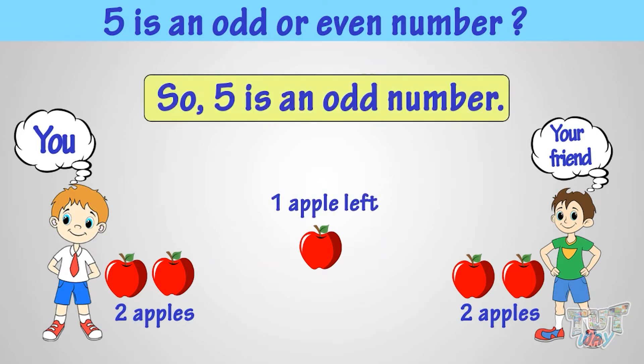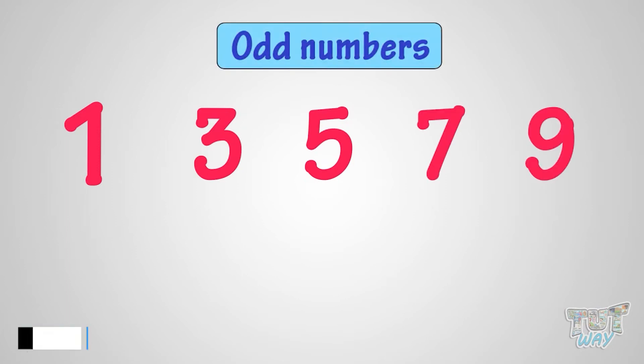Good! Now don't forget, one, three, five, seven, and nine are odd numbers. And all numbers ending with them, like 19, 17, 25, and 13, are odd numbers.